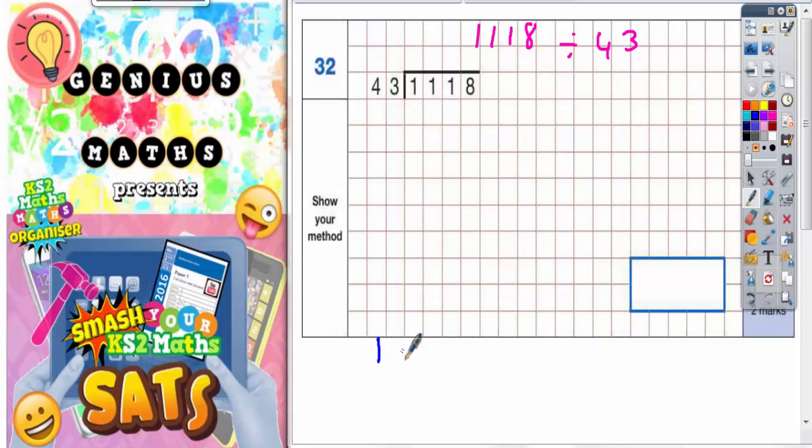So we'll have 1 lot of 43, 10 lots of 43, 100 lots of 43.